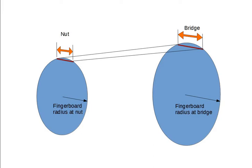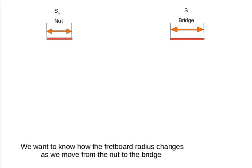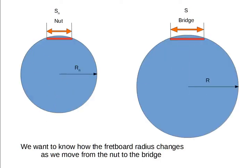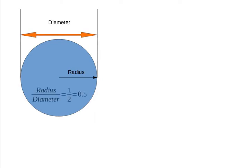Fortunately, this is quite easy to work out. To make the reasoning more obvious, we'll take a more familiar situation. Here's a circle. Here's the radius. Here's the diameter. We know that the radius is half the diameter, so if we divide the radius by the diameter, the ratio will always be one-half, or 0.5.